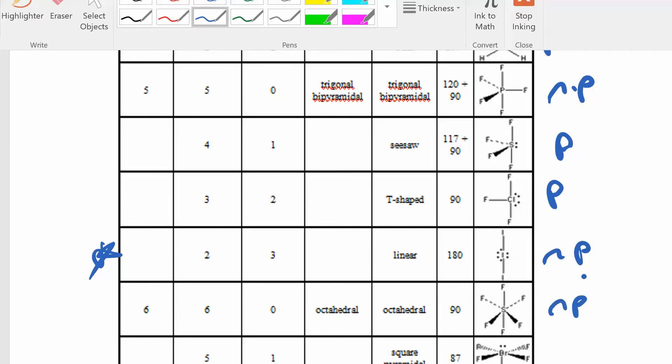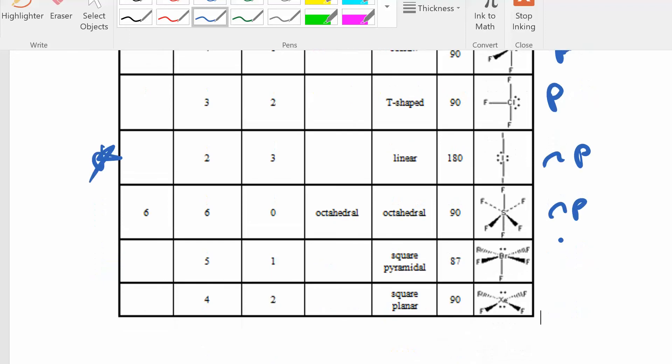Octahedral is also nonpolar. Square pyramid would be polar. And then here's another weird one where you have lone pairs right on the top and the bottom, but this ends up being nonpolar. So that's kind of your cheat sheet on how to do this.